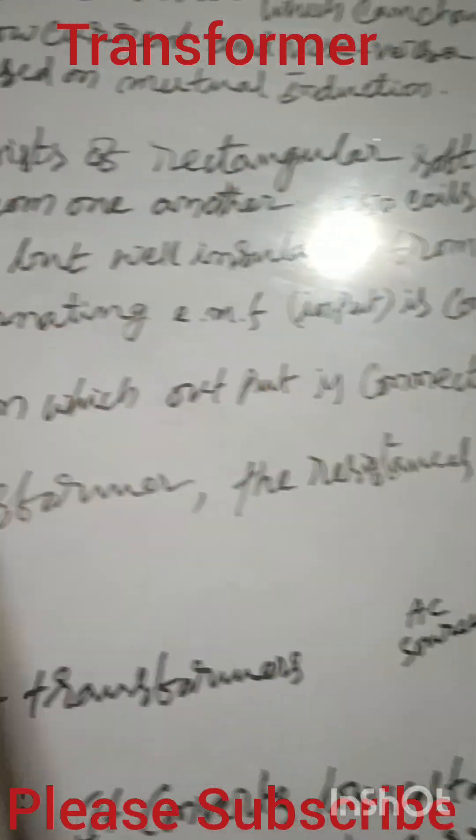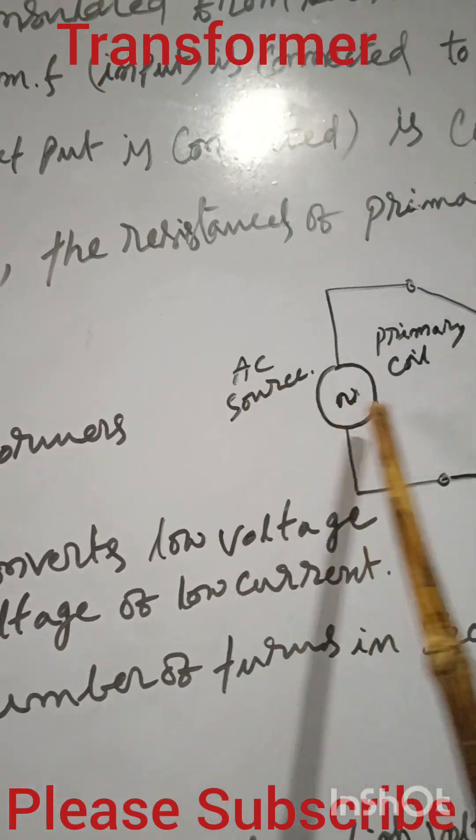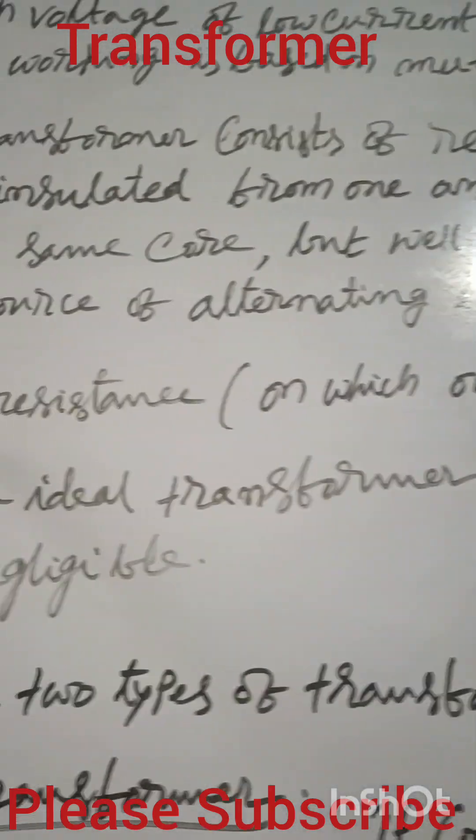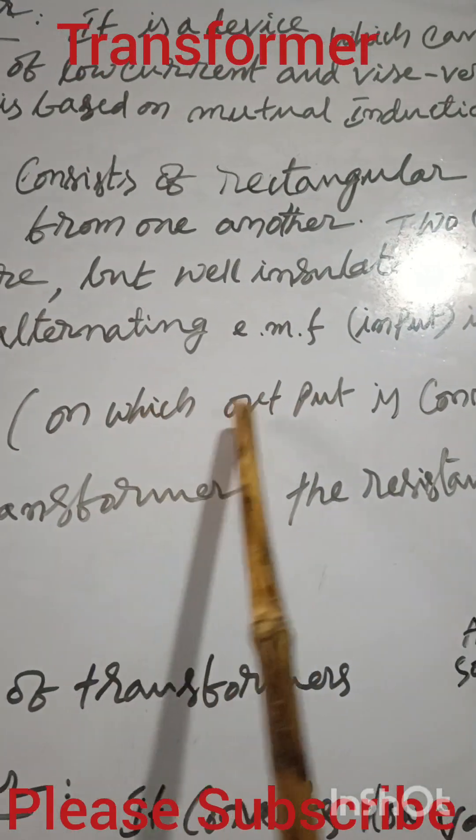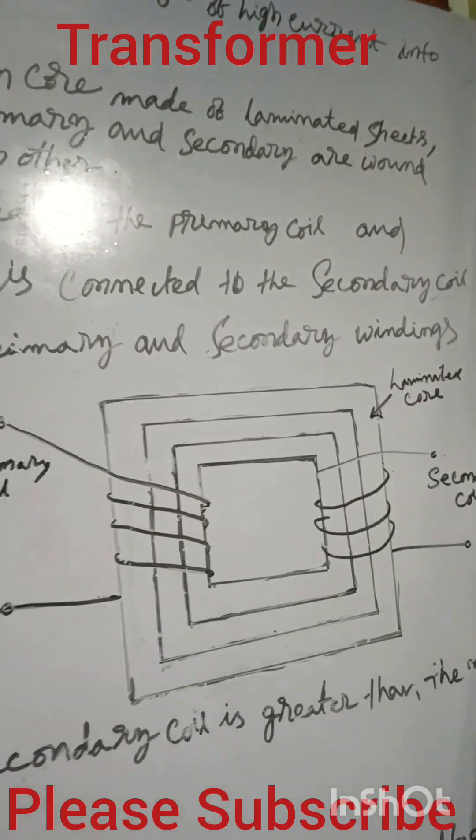So the source of alternating EMF is connected to the primary coil. Here the source of alternating current is connected to the primary wire. And load resistance on which output is connected is connected to the secondary coil. Here secondary coil, here the load is connected.